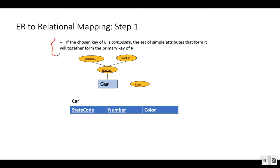If the chosen key attribute is itself composite, its simple components form the primary key together. For example, the entity Car has a key attribute License, which is a composite attribute with simple components StateCode and Number. We create a relation Car with attributes StateCode, Number, and Color. StateCode and Number together form the composite primary key.